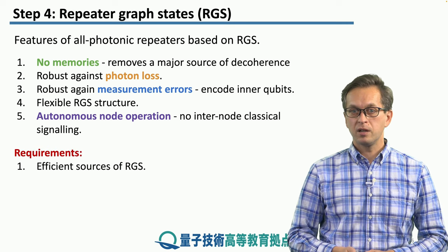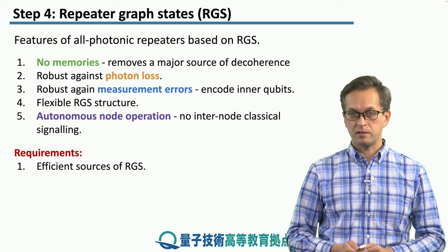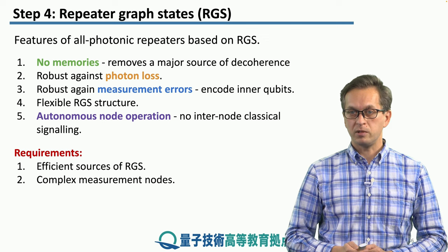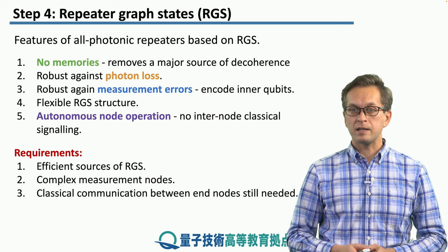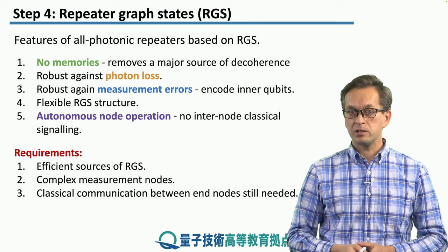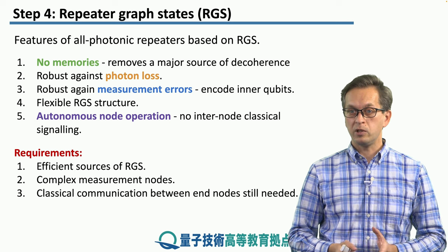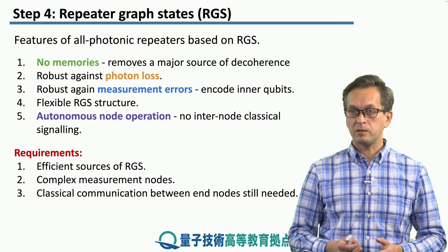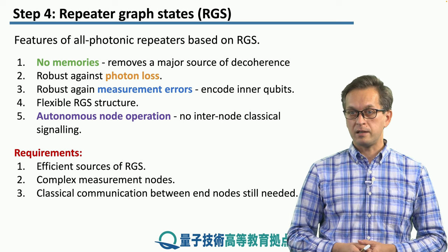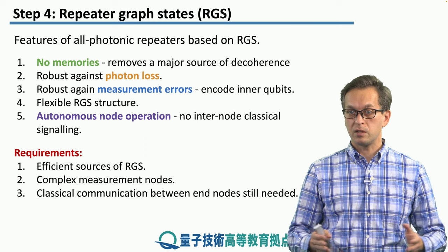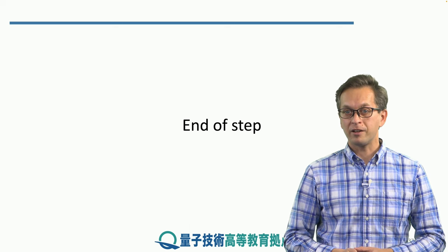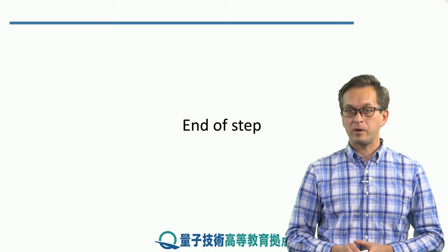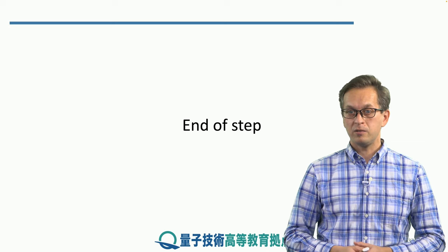The requirements for this to work are that we need very efficient sources of these repeater graph states, and we need quite complex measurement nodes — not only in terms of hardware, but software as well. In the end, we still require classical communication between the end nodes. Depending on the application, it might not matter when this classical communication arrives. For example, in QKD, the photons can be measured out and then classical communication about the Pauli frame can be incorporated into the analysis later. But for some other applications, like distributed computation, we might have to wait for the classical signal to reach the end nodes. That covers our link architecture without quantum memories. In the next final step, we're going to talk about an architecture that doesn't use flying qubits and only uses stationary qubits.